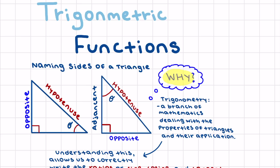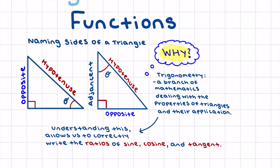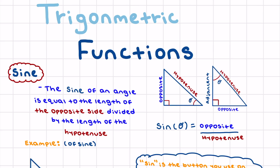You might wonder why we need to do this. Trigonometry is a branch of mathematics dealing with properties of triangles and their applications. Understanding how to name these sides allows us to correctly write the ratios of sine, cosine, and tangent. The first trig function is sine — the sine of an angle equals the length of the opposite side divided by the length of the hypotenuse.